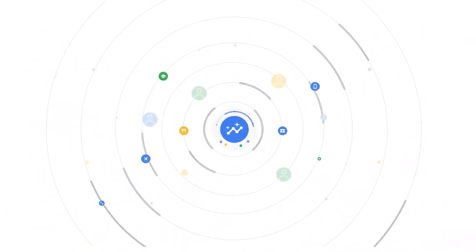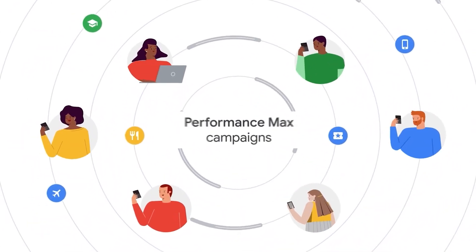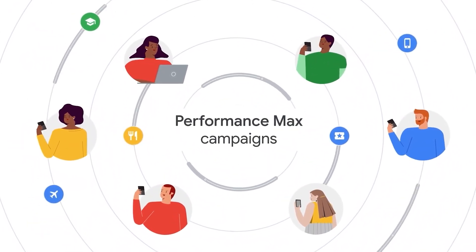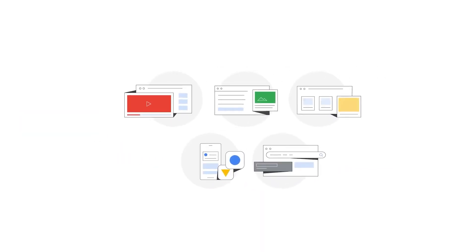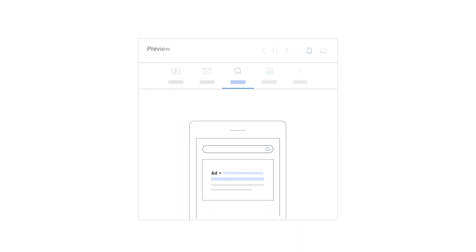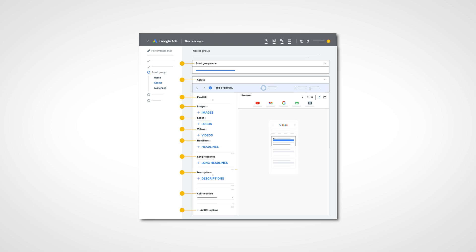One of the best functionalities about Performance Max campaigns is that you can set up targeted asset groups that contain targeted ad copy, images, videos, and landing pages which align the user's search term with your ad copy and then the landing page. This is the reason why Google Ads designed Performance Max campaigns to have asset groups.